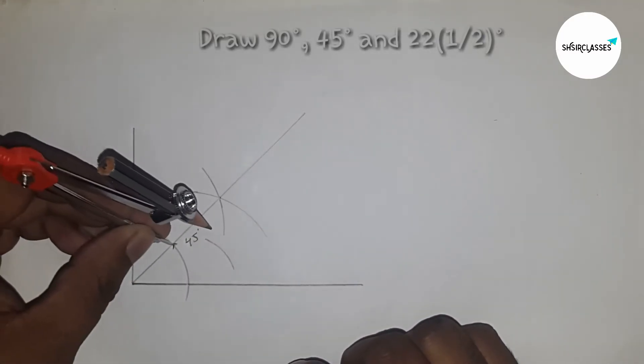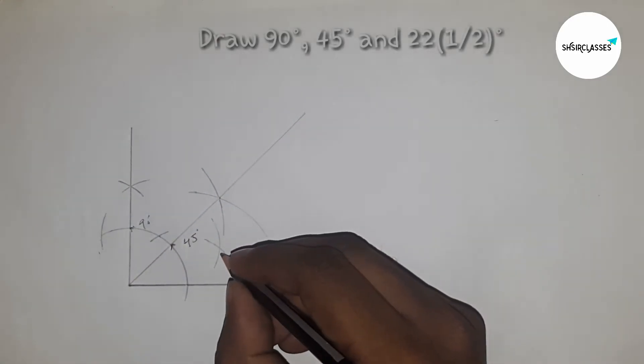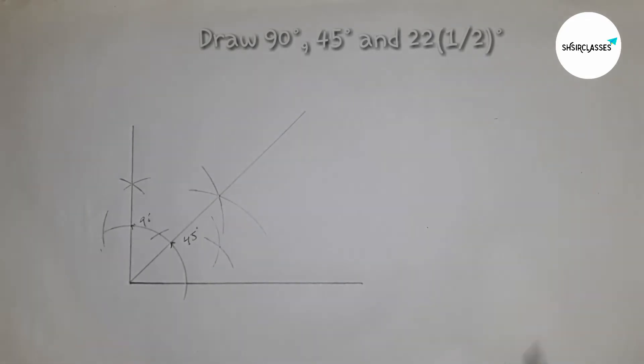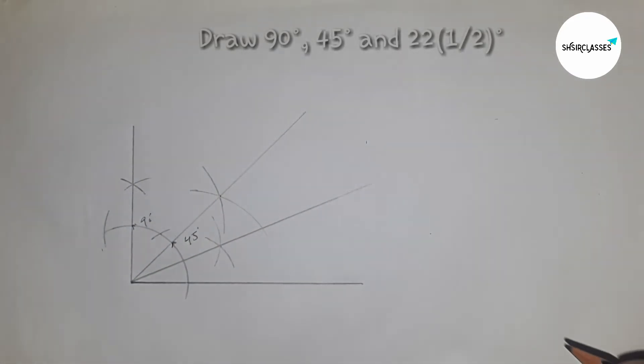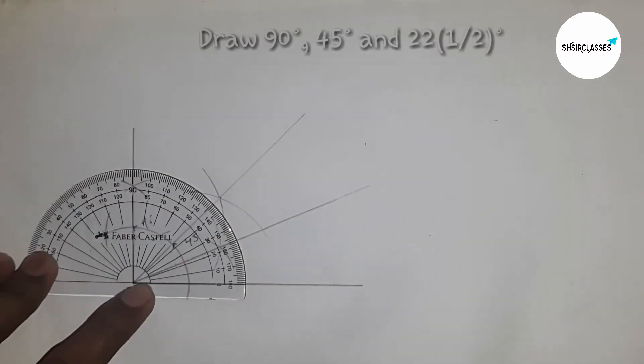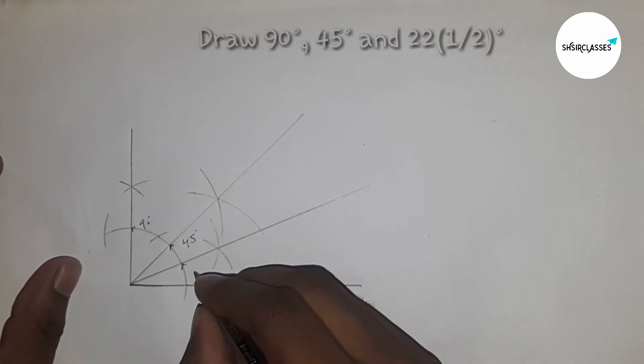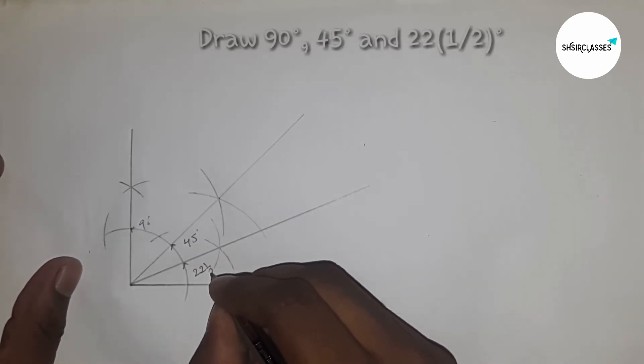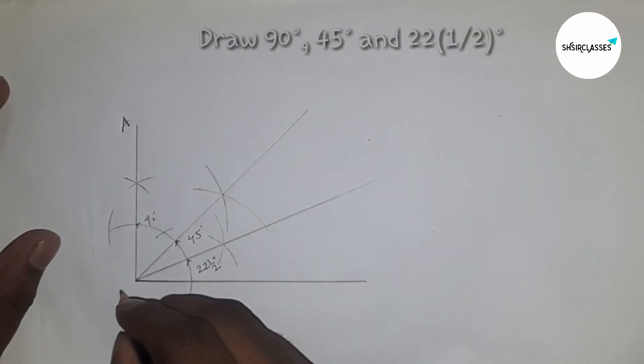Putting here and cutting the curve. Now I'm getting an intersecting point, so I'm going to join these two points to get the 22 and a half degree angle. I'm going to check whether it is correct. So 20, 21, 22, okay. So it is 22.5 degree angle.